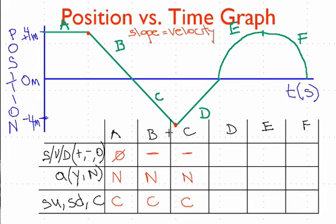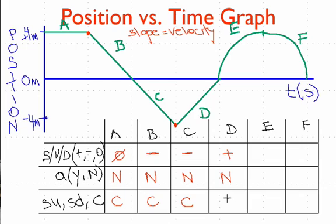Let's go on to D. This one obviously looks a little different — it's sloping up. So now we've stopped and turned around, and we're going back in the positive direction. But the slope is constant. It's positive, but it is constant, so there's no acceleration. We're not speeding up or slowing down, so that's constant.